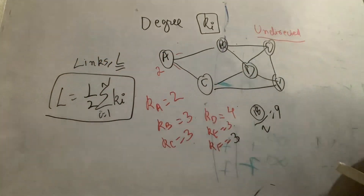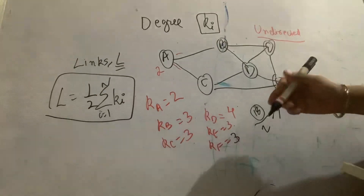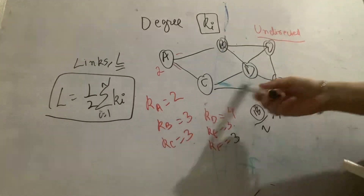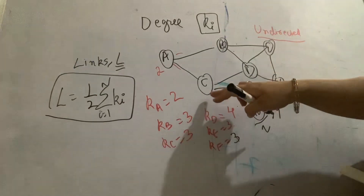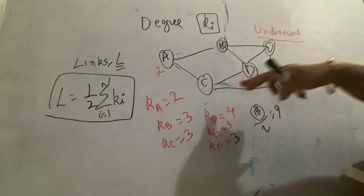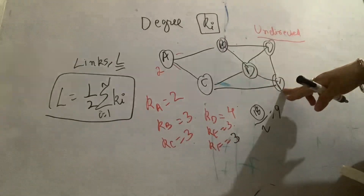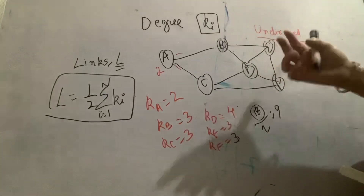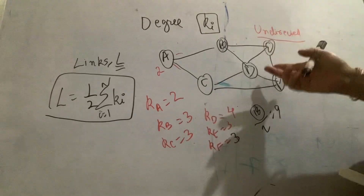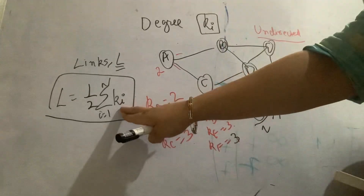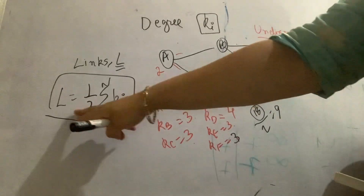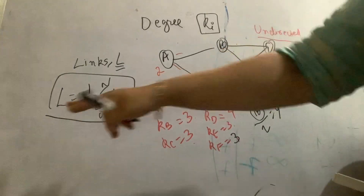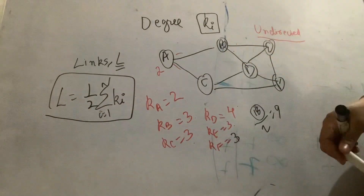Total of all the degrees for all nodes, divided by 2 — why? Because every link is counted twice. It is counted in degree of C and also in degree of F. Since it is an undirected graph, every link is counted twice. That is why, when summing all the degrees for every node, we divide by 2 to calculate the total number of links in the graph.